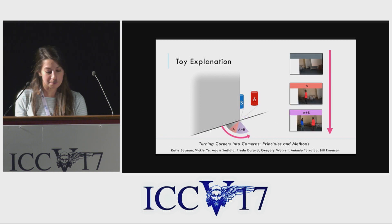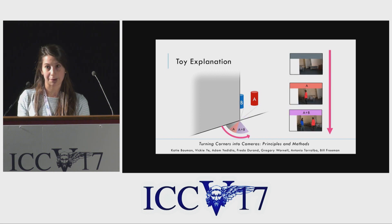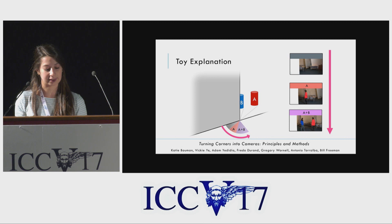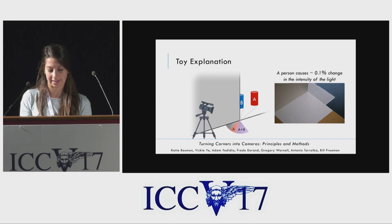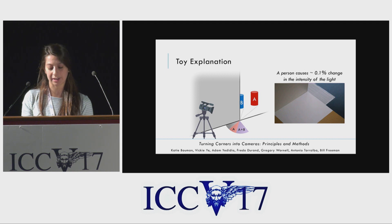Similarly, different points on the ground reflect the integrated light from different slices of the hidden scene. The presence or absence of a person in the scene often makes a difference of just about a tenth of a percent in the reflected light. These changes in the penumbra are usually invisible to the naked eye.